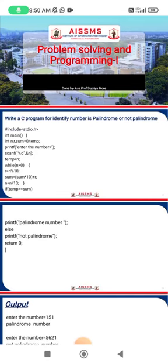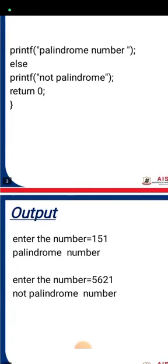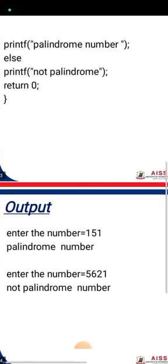Palindrome means where we can read the number from the start and it is the same as reading it from the last. For example, the number 151 — reading from the start gives 151, and reading from the last also gives 151, so this number is a palindrome. If it is another number like 5621, the starting and ending are different, so this is not a palindrome number. This is exactly the output of our program.